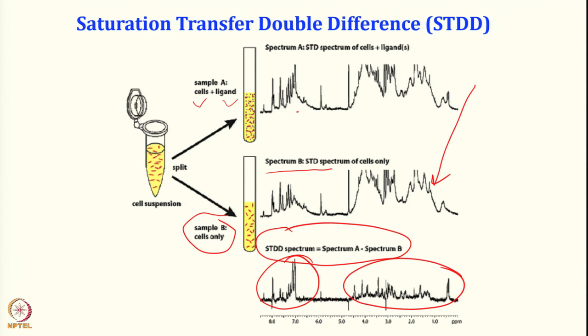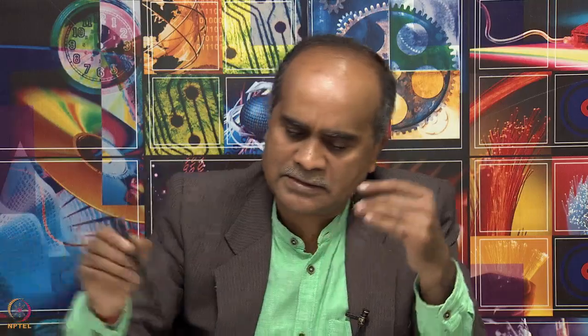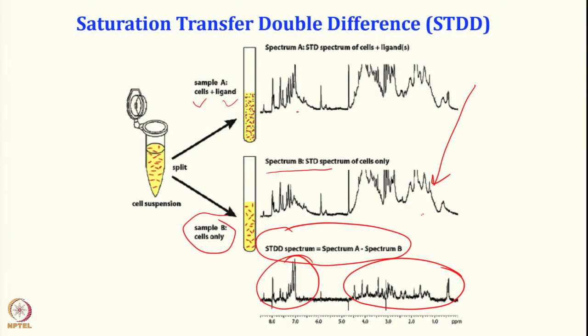To emphasize: we take a cell suspension and split it into two. In one we add the ligand; in the other we do not. For the first sample we perform STD NMR — saturating the protein/cell signal — and also record without saturation. We do the same for the second sample. We take the difference of the two STD spectra. The illuminated signals in this double difference — STDD — tell us which ligands are binding. Even without purifying protein, from a cell suspension we can find the ligands binding to a particular receptor.